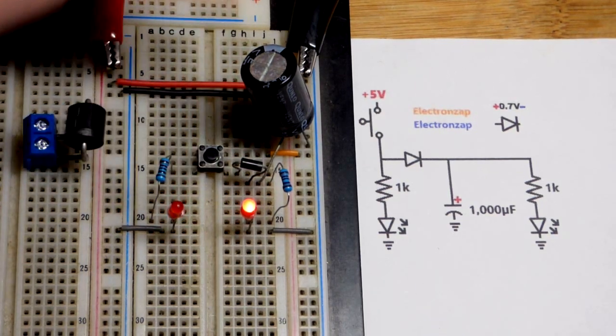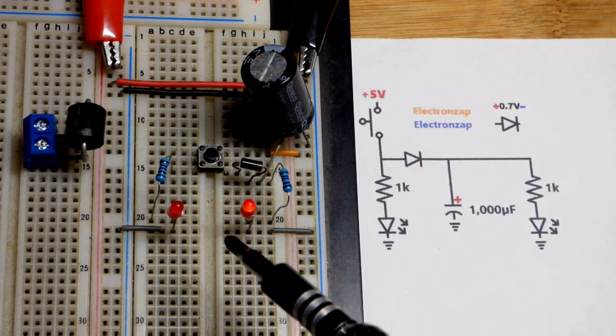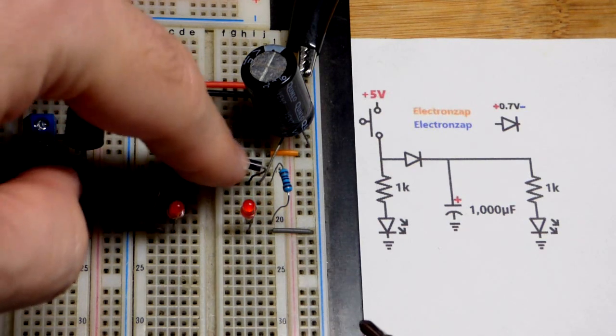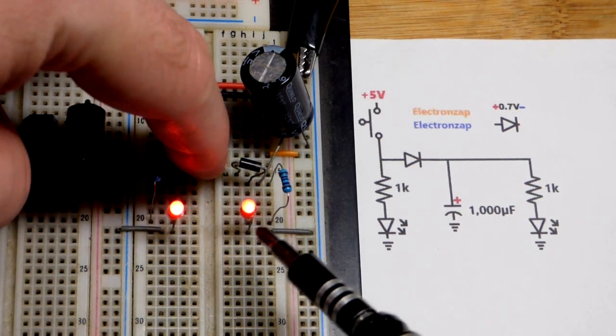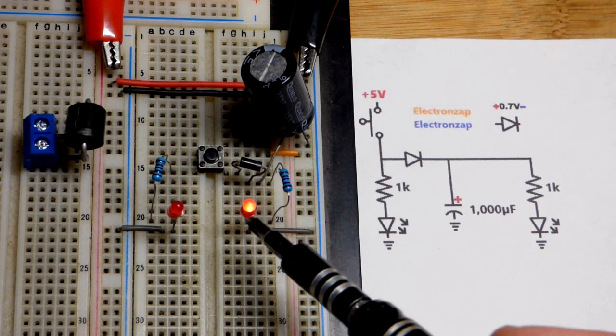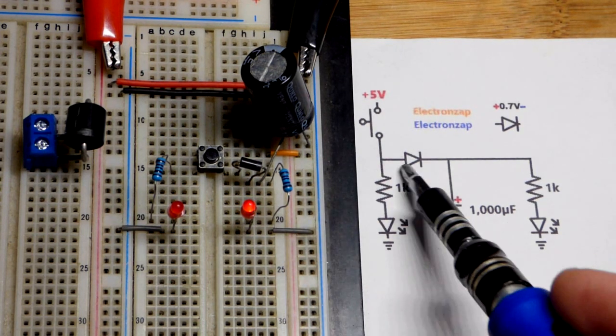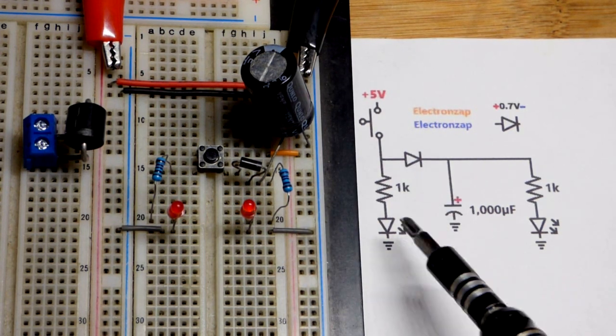But when I release the switch, the LED without the capacitor turns off instantly, whereas the one with the capacitor dims down. So now without the diode there, they would both dim down twice as fast.